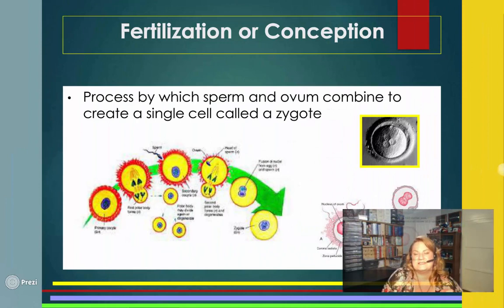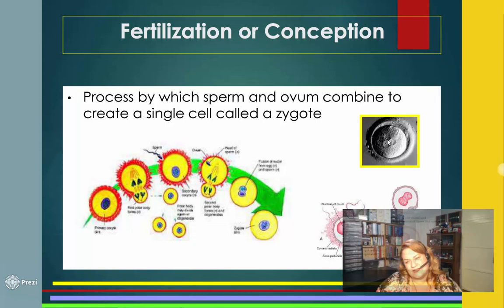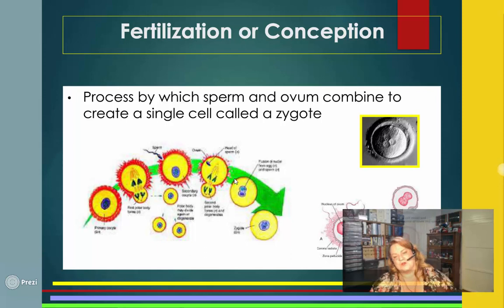Fertilization or conception is the process by which the sperm and the ovum combine to create a single-celled organism called a zygote. As it gets bigger, there are different terms, but the key one is zygote. Make sure you know this as a definition — if it's a definition in the book, you will need to know it.